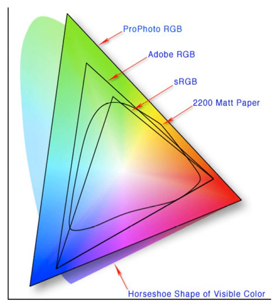CMYK uses subtractive color mixing used in the printing process, because it describes what kind of inks need to be applied so the light reflected from the substrate and through the inks produces a given color. One starts with a white substrate and uses ink to subtract color from white to create an image. CMYK stores ink values for cyan, magenta, yellow, and black. There are many CMYK color spaces for different sets of inks and substrates, which change the dot gain or transfer function for each ink and thus change the appearance.